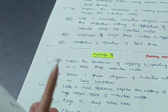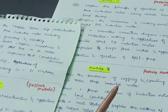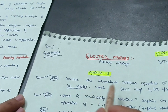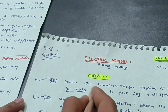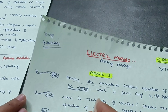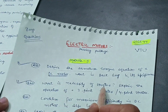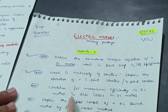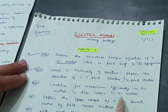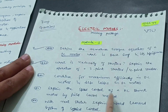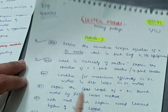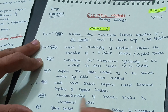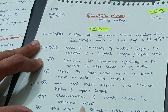For module one, the important questions are: derive the armature torque equation of a DC motor and explain back EMF and its significance — this is the most important one. Then, explain the necessity of a starter and the operation of three-point and four-point starters. Also focus on conditions for maximum efficiency in DC motors and losses in DC motors. Then, explain the speed control of a DC shunt motor by the field control method, and with a neat sketch explain the Ward Leonard system of speed control.